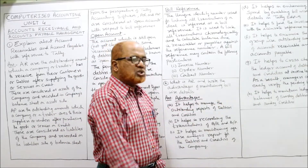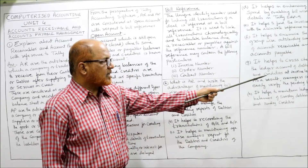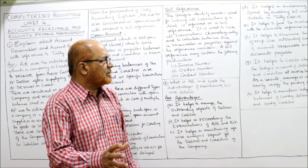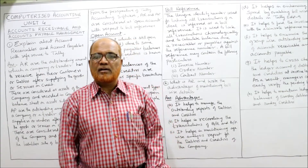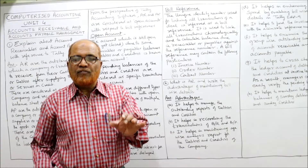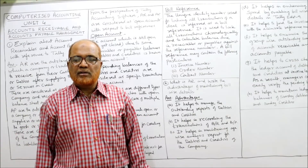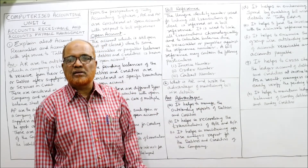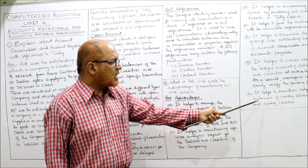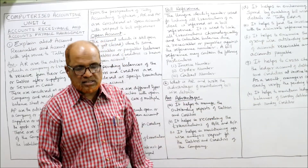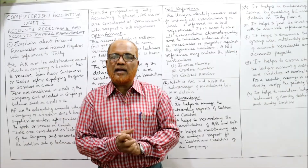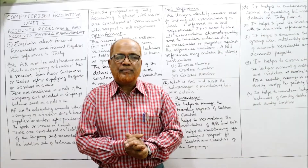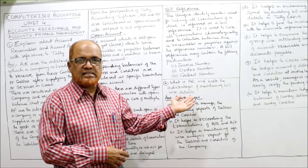The seventh advantage is that it helps cross-check the ledger accounts of debtors and creditors at the invoice level, so managers can easily verify and manage pending bills. The eighth and final advantage is that it helps maintain ledger balances of sundry debtors and sundry creditors when bill-wise details are kept.